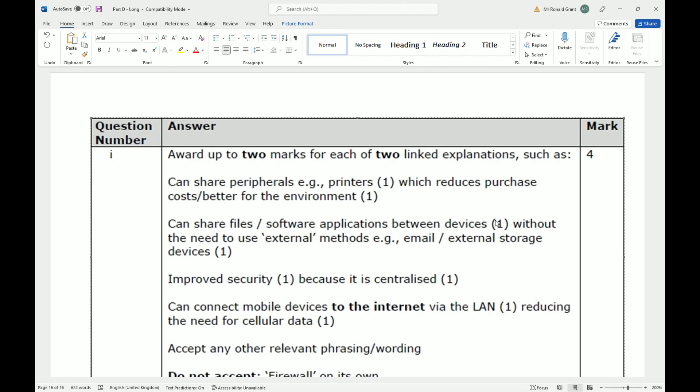You can share files and software applications between devices without the need to use external methods, like email or external storage devices. That's true again because you have everything on the same network. I can actually transfer files from my Xbox to my PC without any memory stick or hard drive. I can transfer it from my laptop to my desktop without any memory stick or hard drive because we're all connected to the same network. Once I allow my devices to be shared on the network, it's very straightforward.